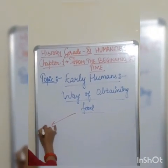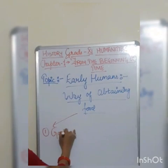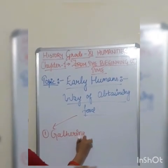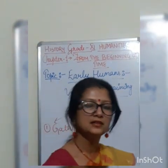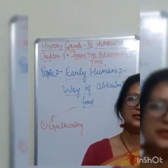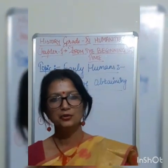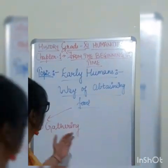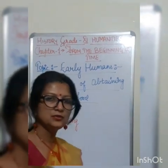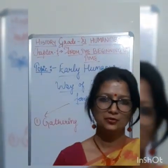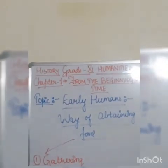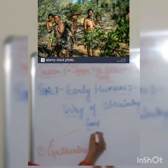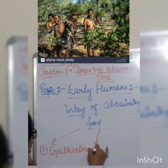Ways of obtaining food are as follows. Number one is gathering. We are well aware of the gathering process. In village and remote areas, people still do this work in their daily routine — they collect firewood, go to the jungle, and collect dry leaves. This process is called gathering.